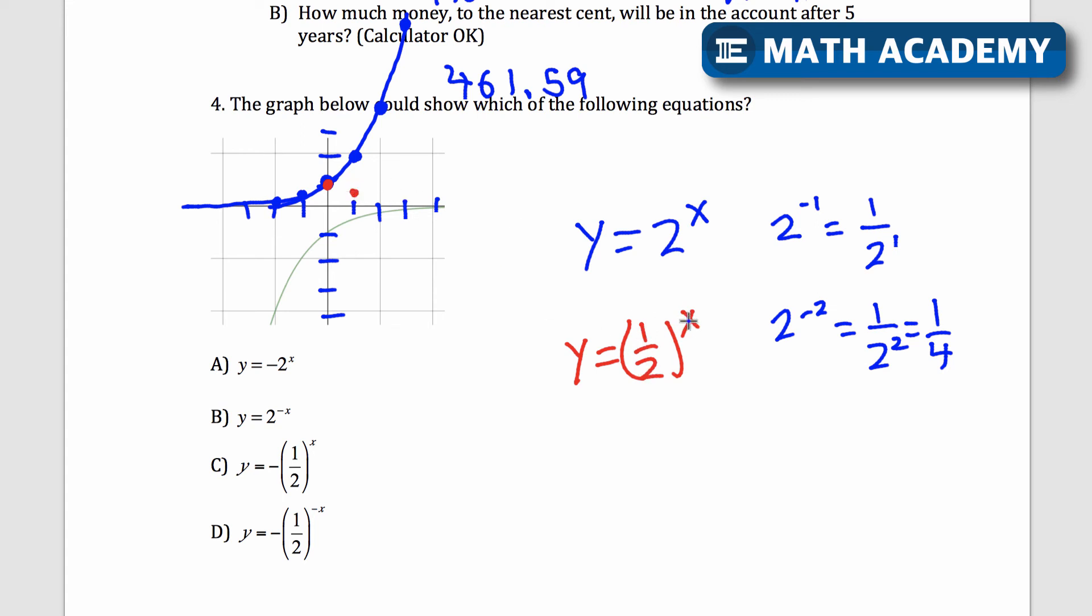1 half to the power of 2, well, 1 half squared is 1 fourth. So we're halving as we go to the right, and that's going to be 1 eighth, 1 16th, etc.